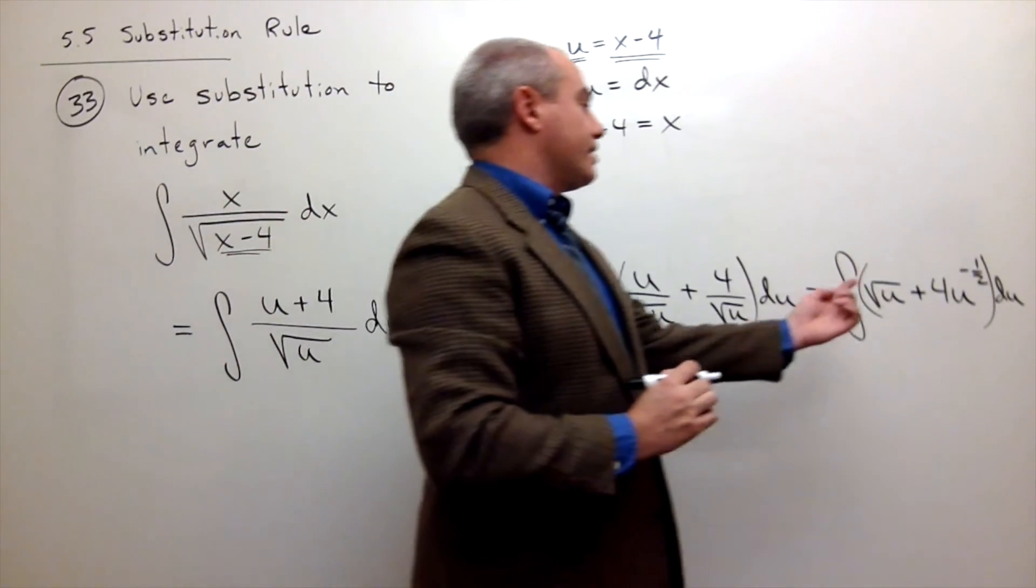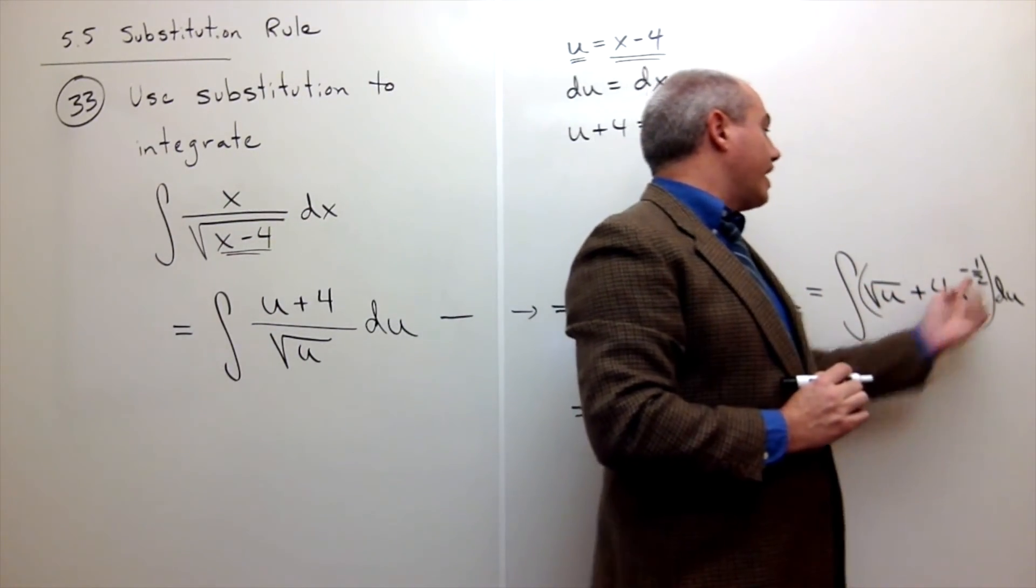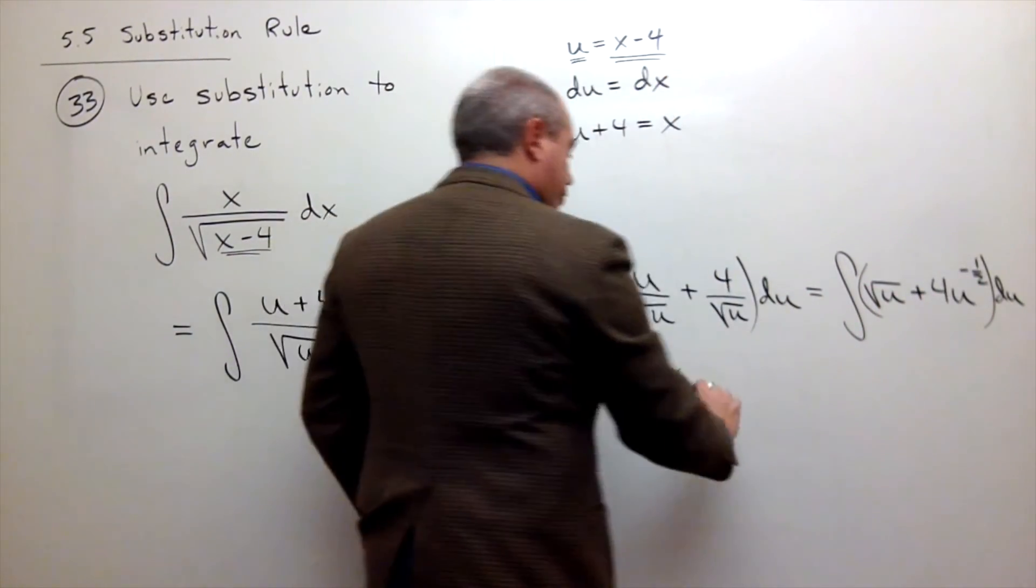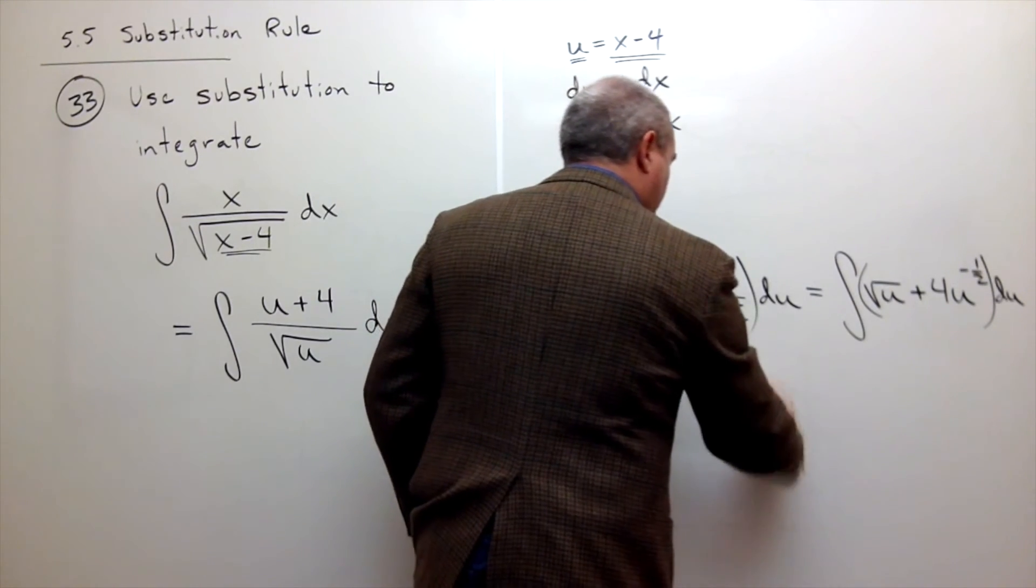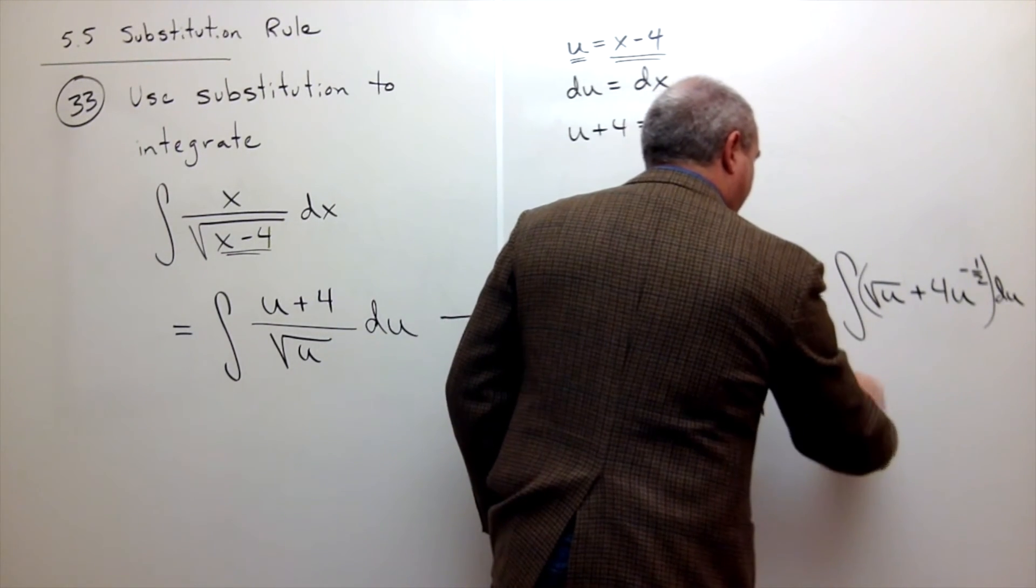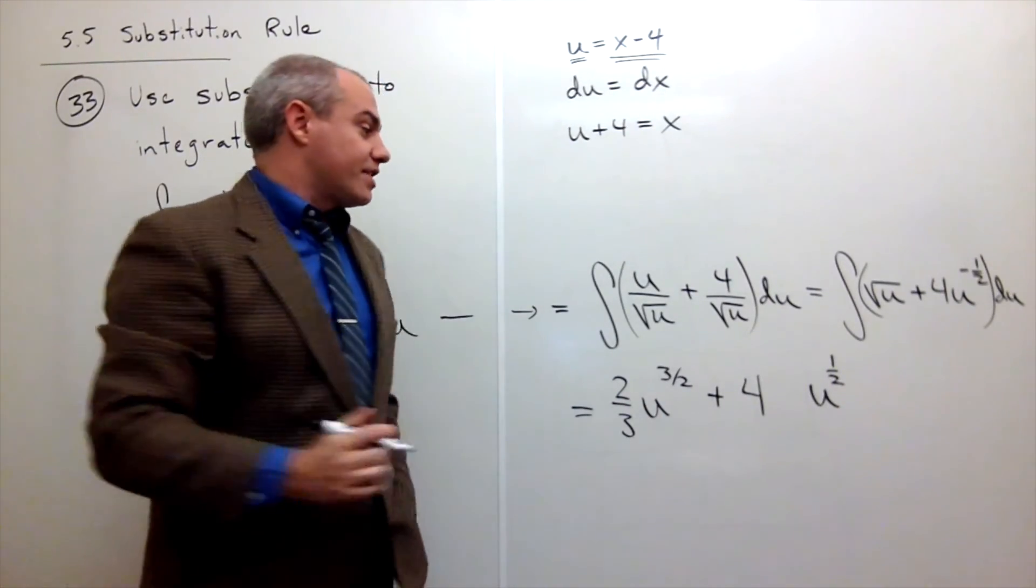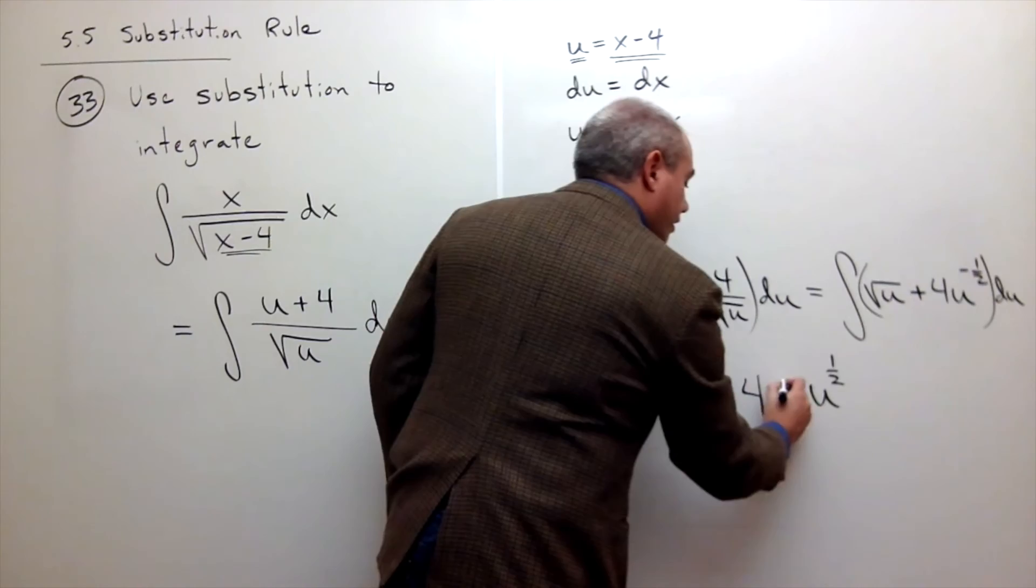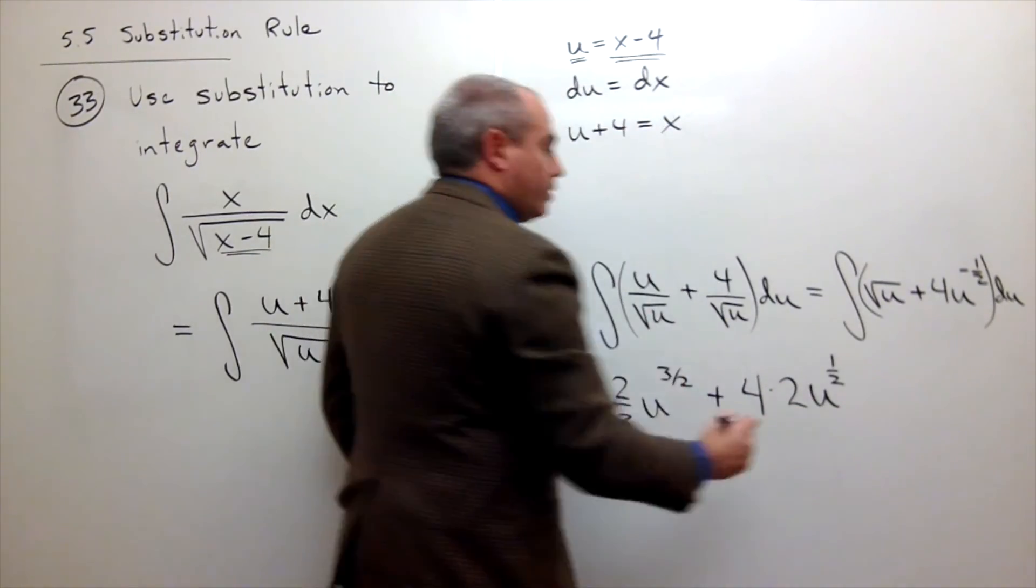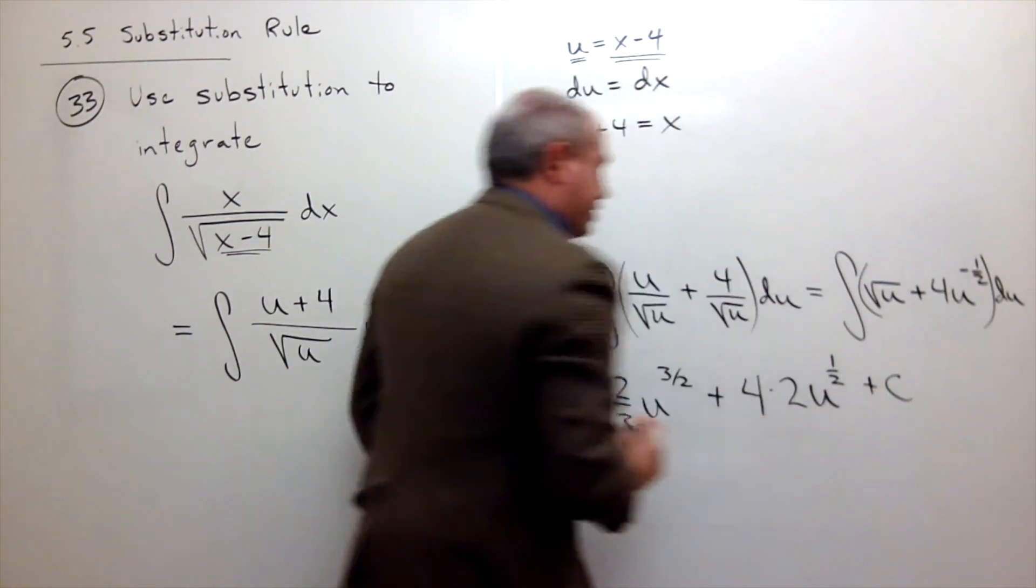Then I need to take an antiderivative of 4u to the -1/2, which would be 4, and then u raised to the 1/2 power, divided by 1/2, which is the same as multiplying by 2, plus our constant of integration.